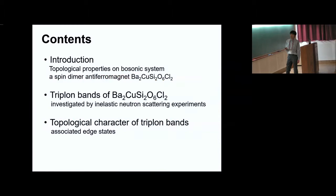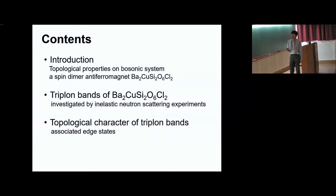Here I outline today's contents. First, I will introduce roughly the topological properties of bosonic systems and the structure and macroscopic properties of the spin dimer antiferromagnet volborthite-2 copper Si2O6 Cl2. Next, I present the triplon bands investigated by inelastic neutron scattering experiments. At last, I discuss the topological character of these triplon bands and their associated edge states.